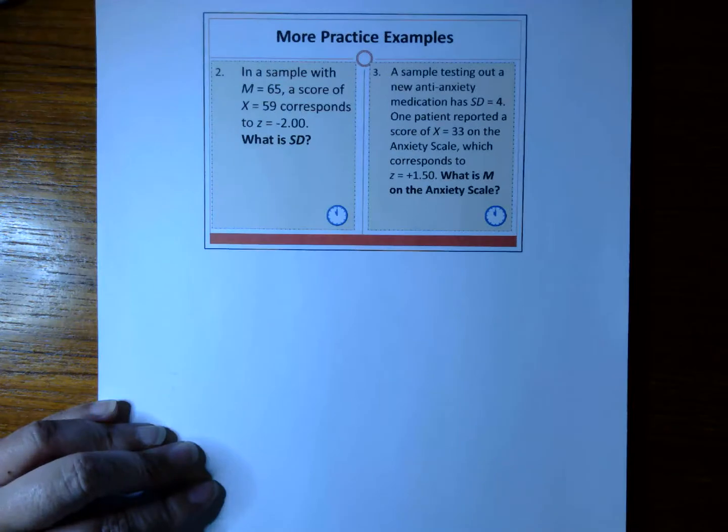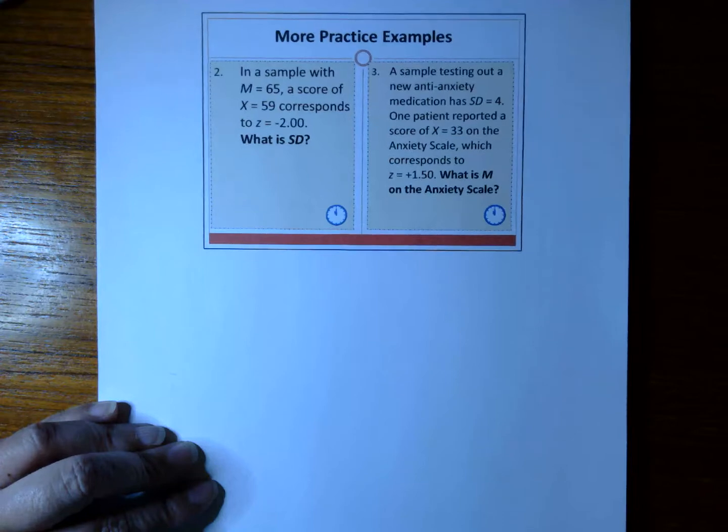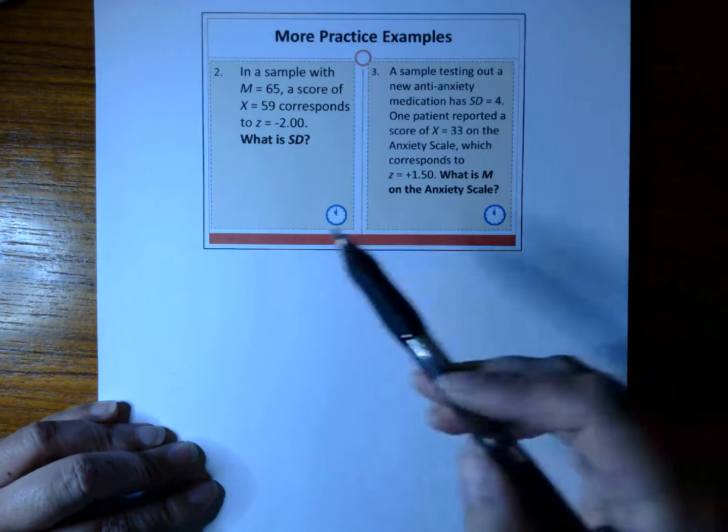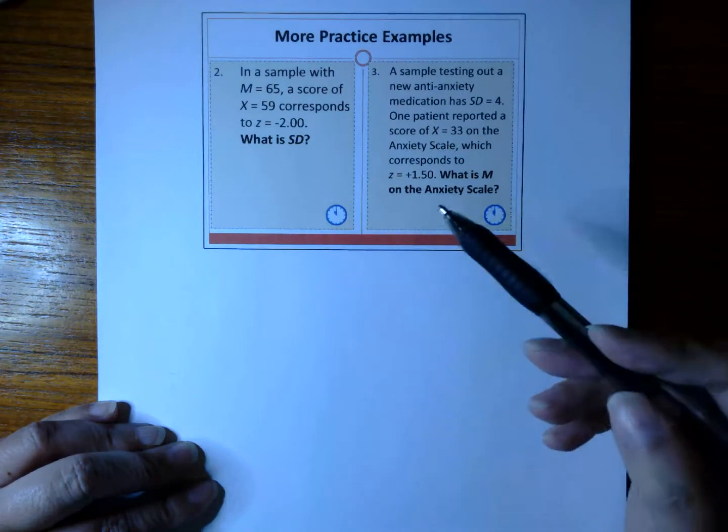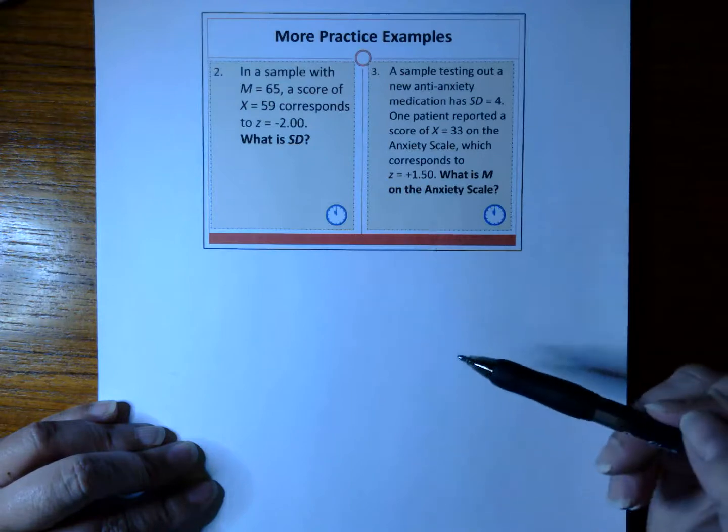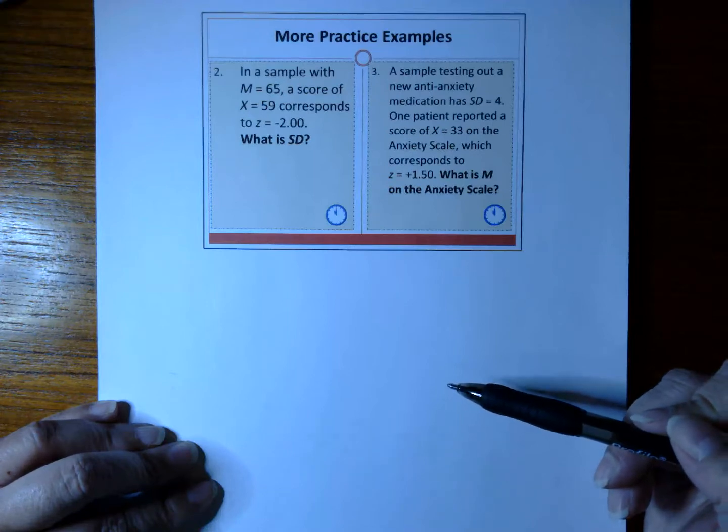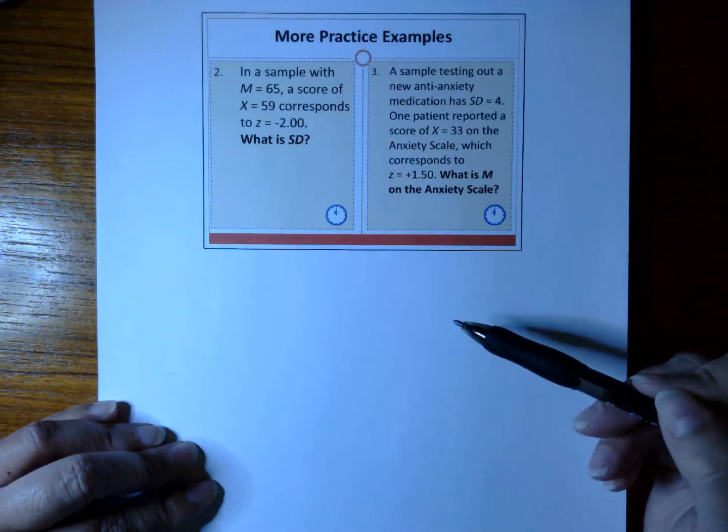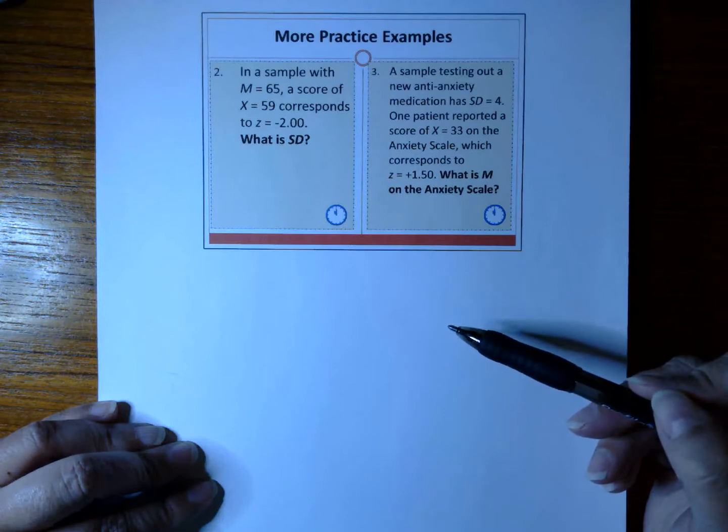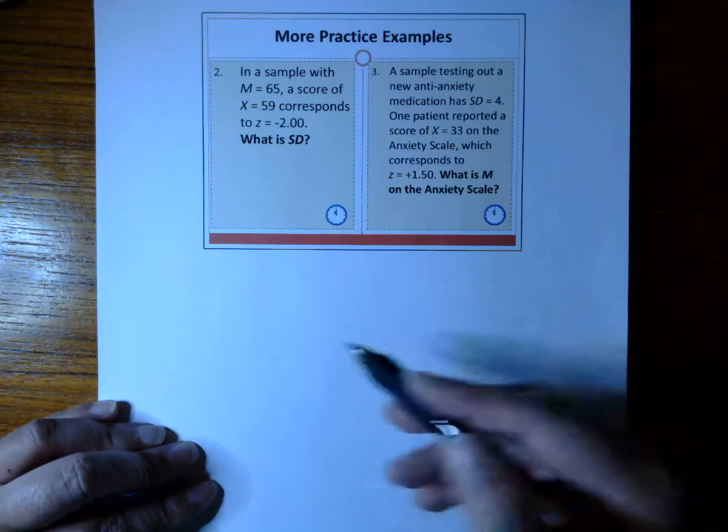You now know how to calculate Z-scores using two different formulas. These two additional practice examples show different ways that the modified formula from the previous slide can be used to solve for standard deviation and mean. As a friendly reminder, when doing word problems, I encourage students to write out the key values first.